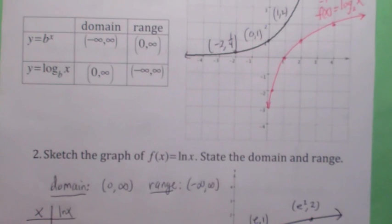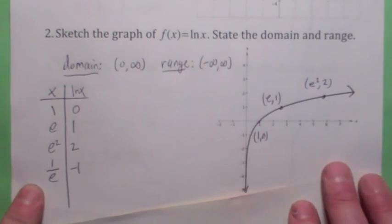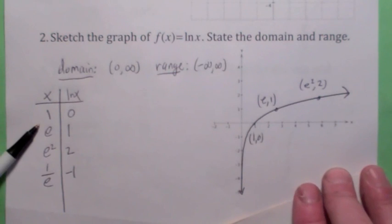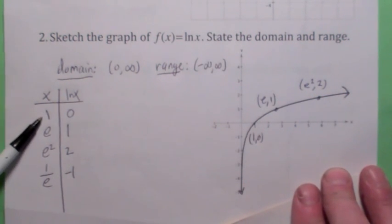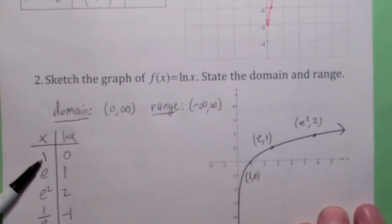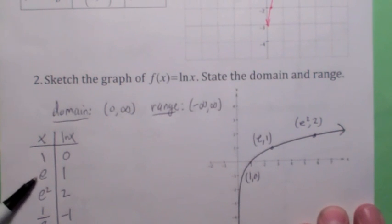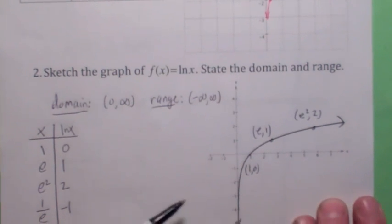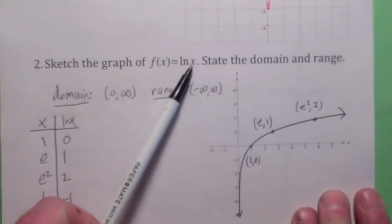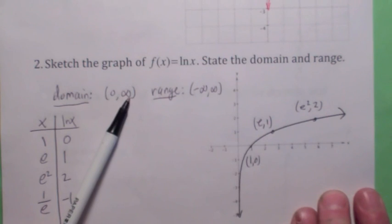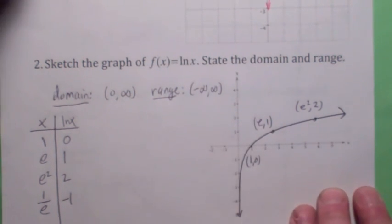Sure enough, the graph looks kind of like this. What you could do to graph it is make a table of values. Natural logarithm of 1 is 0, natural logarithm of e is 1, natural logarithm of e squared is 2, and so on. The thing you're taking the natural logarithm of must be greater than 0, so the domain is 0 to infinity, and the range is negative infinity to infinity.